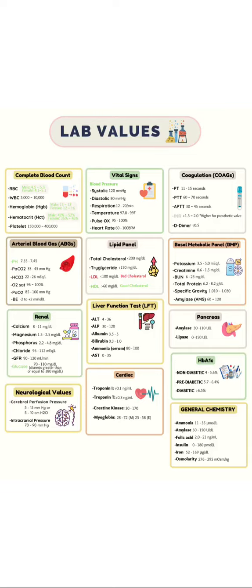Some important points are very important, like arterial blood gas, ABG: pH 7.45, PaCO2, bicarbonate, O2 saturation, PaO2, and BE. These are all values.